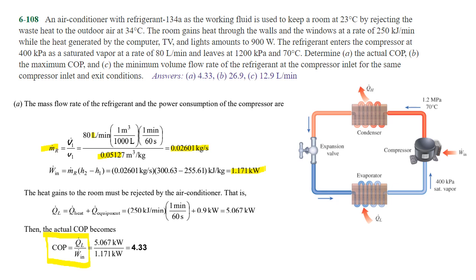We can calculate Q_L, the heat rejection. It's the heat Q dot plus Q dot for the equipment. We're told both of those values: 250 kilojoules per minute leaves through the walls and windows, and 0.9 kilowatts is the heat generated by the computer, TV, and lights. Add those two values up, plug in the values from the above calculations, and the actual coefficient of performance is 4.33.